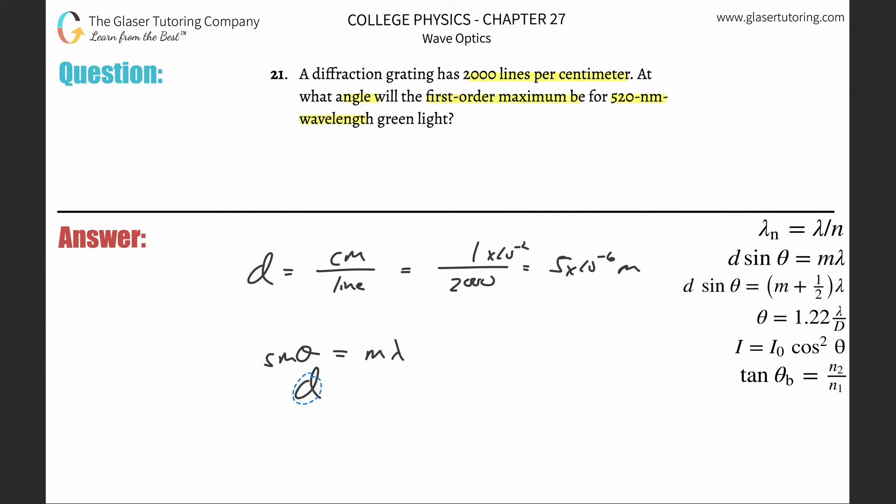If I want to find the angle, I have to divide out the distance between the slits. That's why I did the first part. Now if I want to find the angle, I got to do the inverse sine of both sides so I can get rid of the sine on the left.